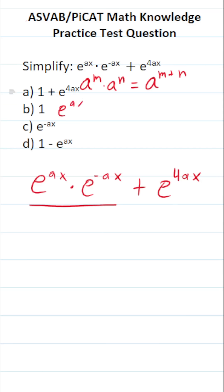Right here, we have e to the ax times e to the negative ax, and this is going to become e to the ax plus negative ax. Ax plus negative ax is going to be e to the zero.